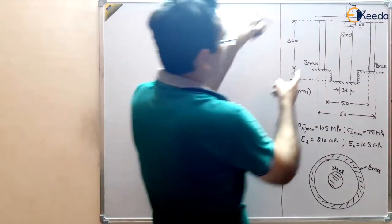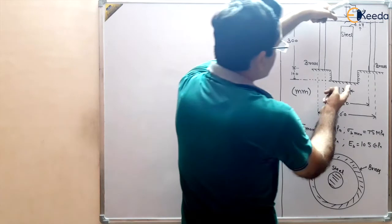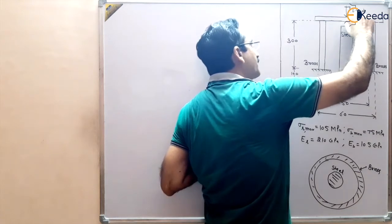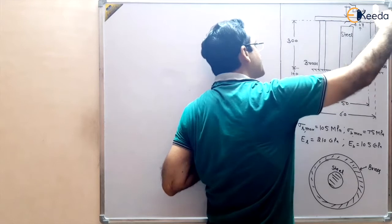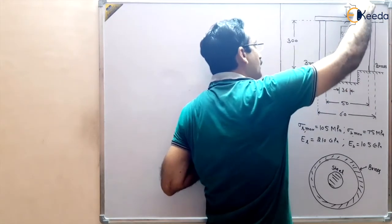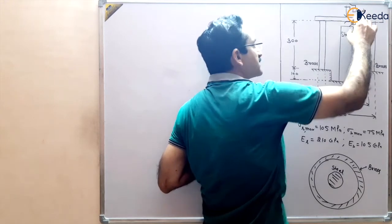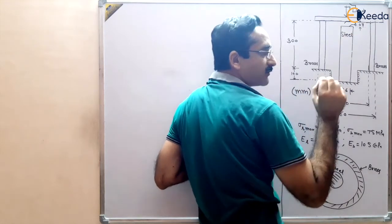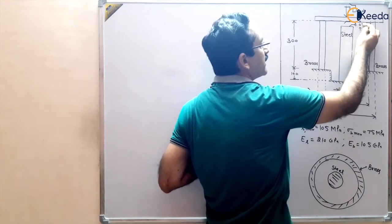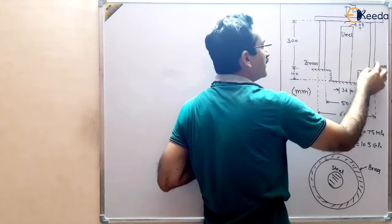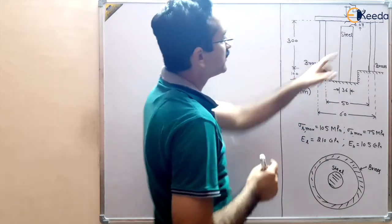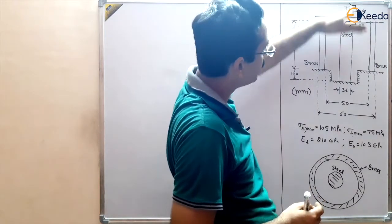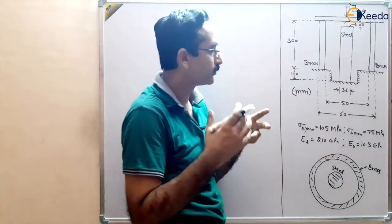The length of the brass is 300 mm and the length of the steel is 400 mm, but there is a gap between the rigid plate placed at the upper end and the steel rod. So when we apply load, it will first fill the 0.08 mm gap — no stress develops in steel until this gap is filled. Initially, stress develops only in the brass. Once the 0.08 mm deflection is covered, the applied force will be shared by steel and brass depending on their properties.